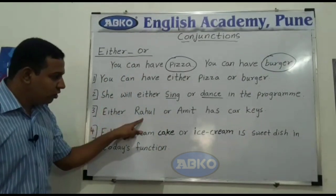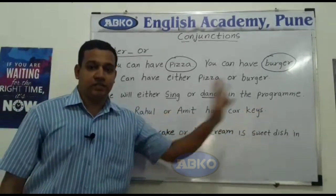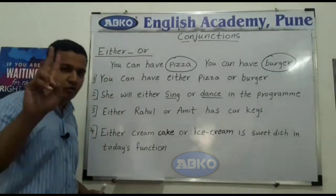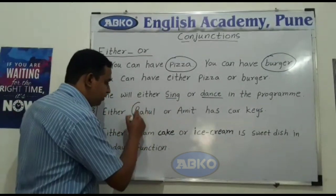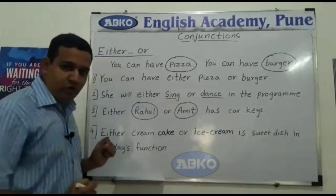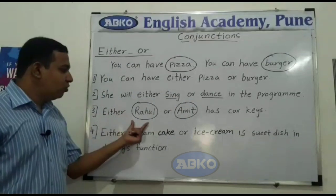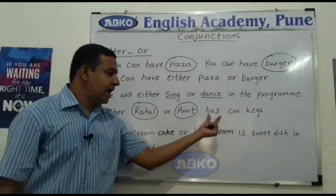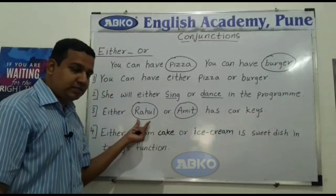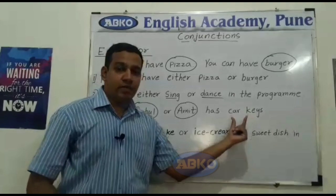Third example: Either Rahul or Amit has car keys. Here there are two options again. Either Rahul or Amit has car keys. या तो Rahul के पास या फिर Amit के पास car की चाबी है.